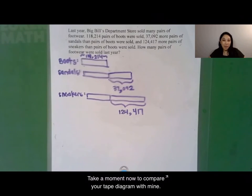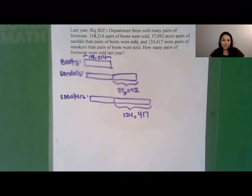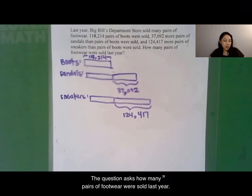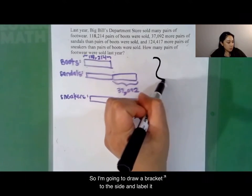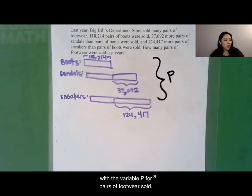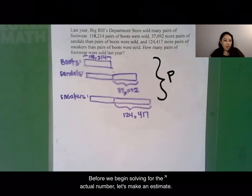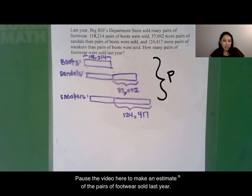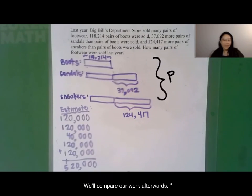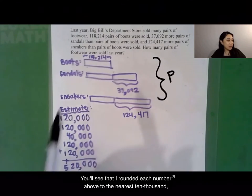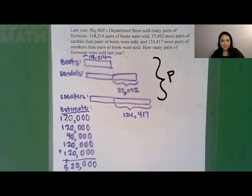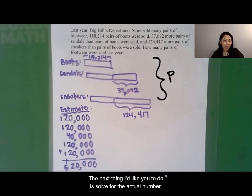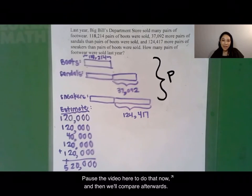Take a moment now to compare your tape diagram with mine. The question asks how many pairs of footwear were sold last year, so we're trying to solve for all of the pairs of shoes. I'm going to draw a bracket to the side and label it with the variable P for pairs of footwear sold. Before we begin solving, let's make an estimate. Pause the video here to make an estimate of the pairs of footwear sold last year. Here's my estimate — I rounded each number to the nearest 10,000, giving me an estimate of 520,000. Now pause the video here to solve for the actual number.